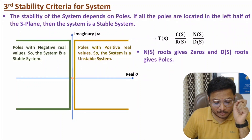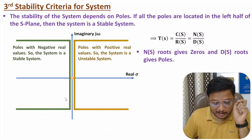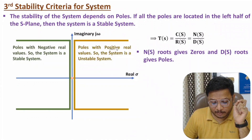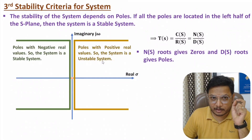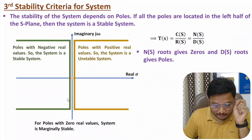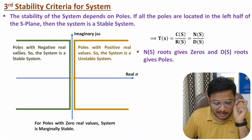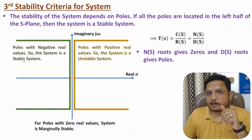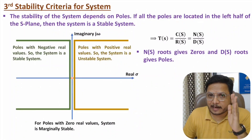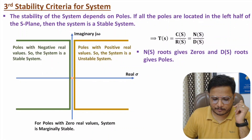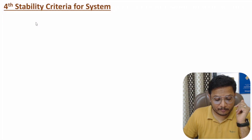So if the real values are negative, the poles are in the left half of the S-plane and the system is stable. If the poles have a positive real value, they are located in the right half of the S-plane, meaning the system is unstable. If poles are on the imaginary axis, the system is marginally stable. So the location of poles defines stability — if the real component of a pole is negative, the system is stable.